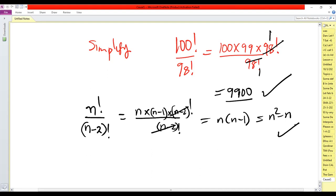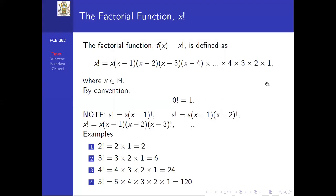That is why knowing how to write higher factorials in terms of lower factorials is very useful for simplification. For numeric examples: 2! = 2×1 = 2; 3! = 3×2×1 = 6; 4! = 4×3×2×1 = 24; 5! = 5×4×3×2×1 = 120. You can define factorials for other natural numbers in a similar way.